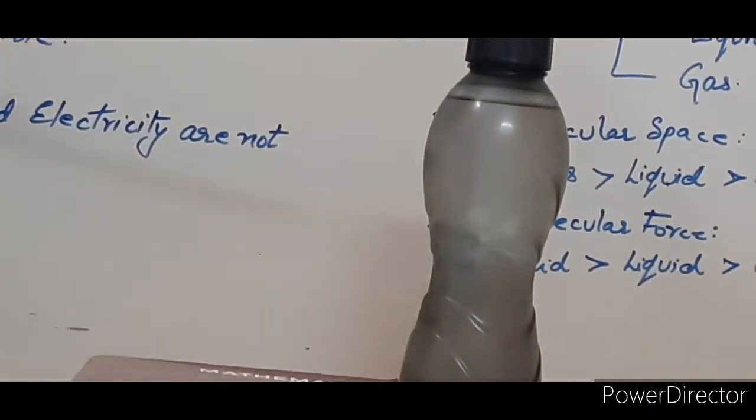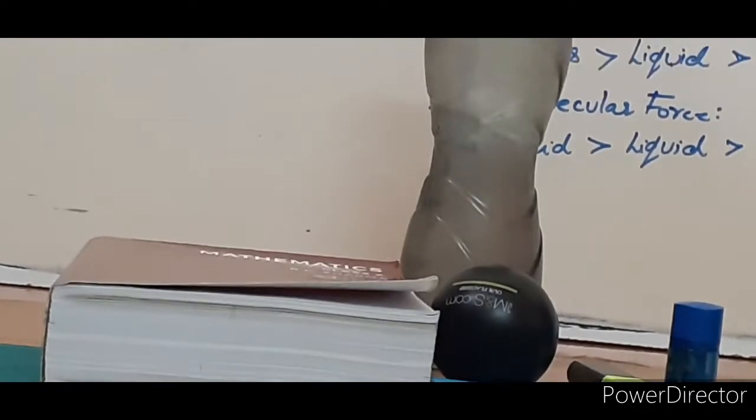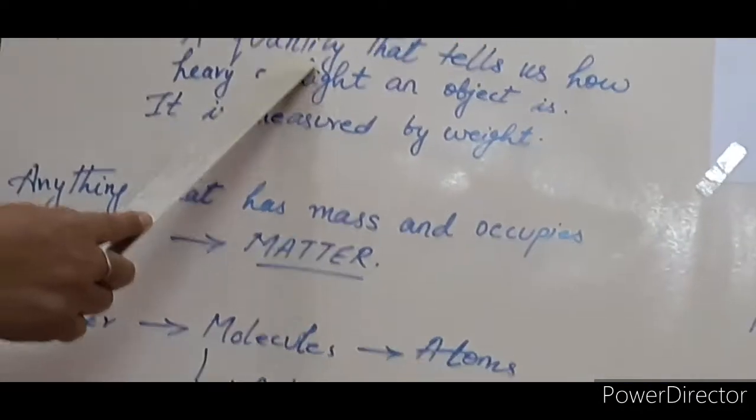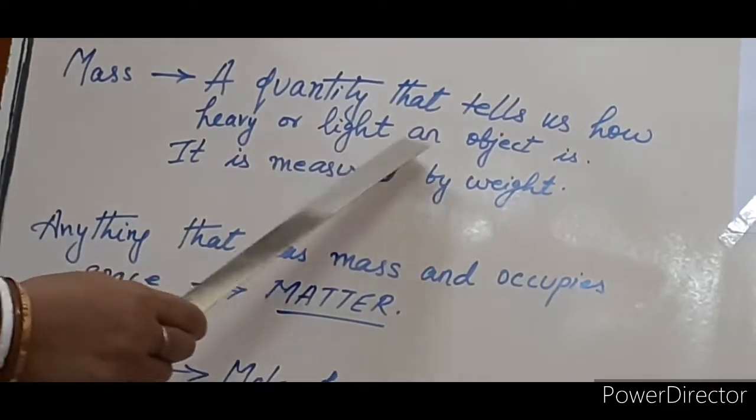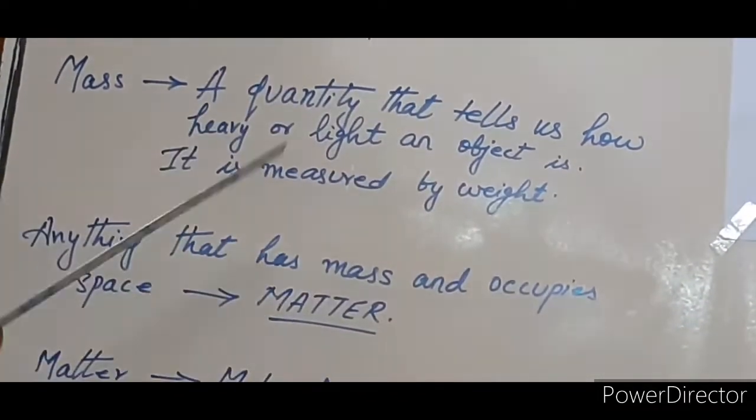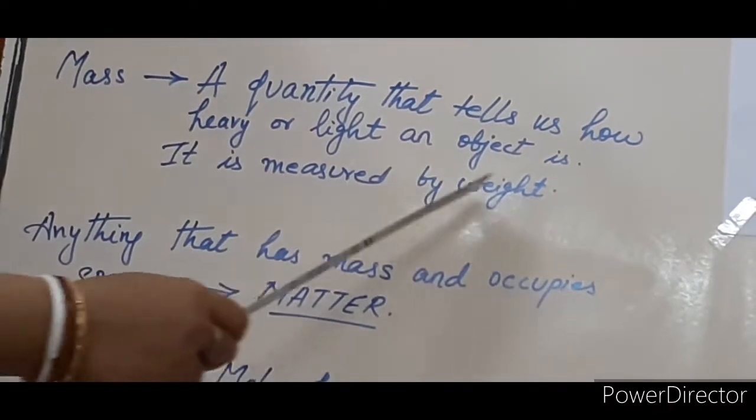First, all objects have mass. So now students, what is mass? Mass is a quantity that tells us how heavy or light an object is. Mass is measured by weight.